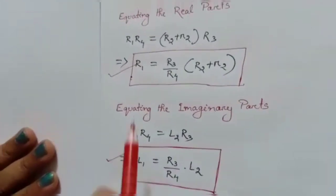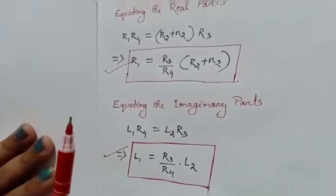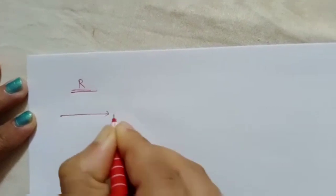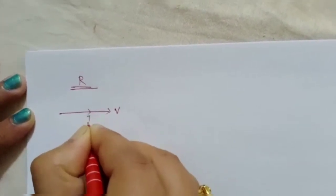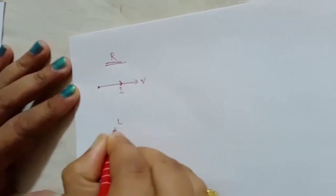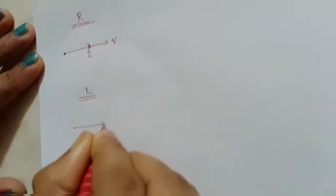Next, we need to draw the phasor diagram of this bridge. Before drawing it, we need some basic concepts. For a simple resistive circuit, V and I are in phase — the phase angle between V and I is zero. For a purely inductive circuit, if voltage is taken as the reference, current lags by 90 degrees.